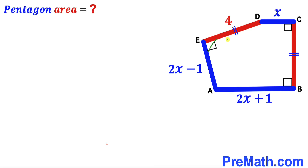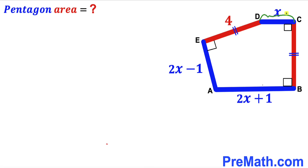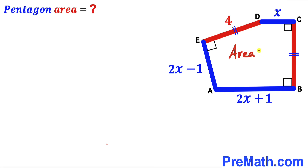Welcome to Pre-Math. In this video we have trapezoid ABCDE such that side DE length is 4 units, DE equals DC, segment CD length is represented by x, side AE length is 2x minus 1, and side AB length is 2x plus 1. Furthermore, all angles are 90 degrees, and our task is to calculate the area of this pentagon.